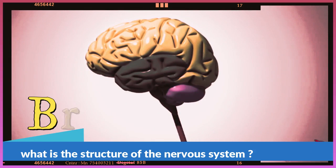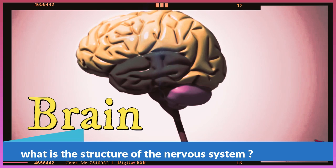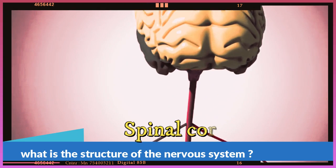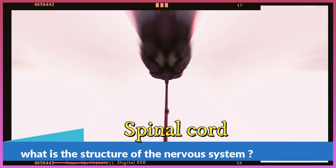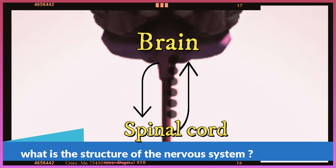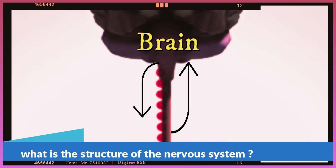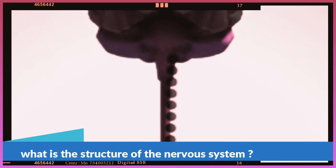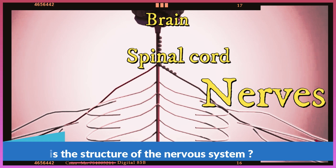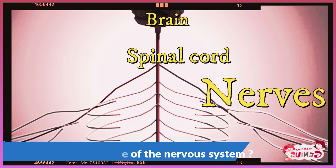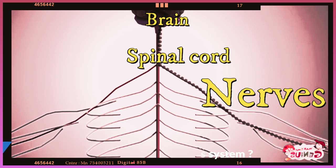1. Brain — the main control center of the body. 2. Spinal cord — carries messages from the brain to the body, and from the body to the brain. 3. Nerves — carry messages from the brain to the spinal cord and other parts of the body, as well as from other parts of the body to the spinal cord and the brain.